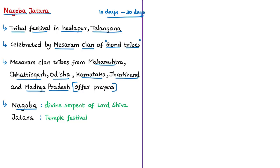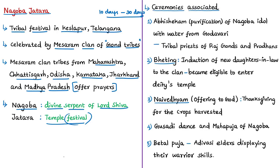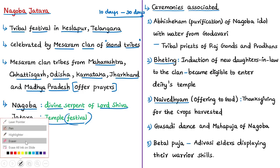Nagoba is the divine serpent of Lord Shiva, and Jatra means festival. During Nagoba Jatra, members of the Masaram clan worship Nagoba and pray for blessings from the serpent god through prayers, rituals, and ceremonies. The festival begins with performing Abhishekam to the Nagoba idol kept in the temple in Kesulapur, Telangana — the purification ritual uses water fetched from the Godavari river, showing how rivers form part of cultural practices of tribal communities.